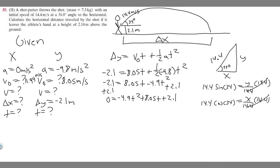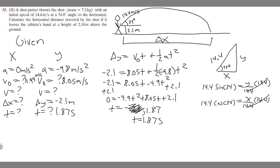The best way to solve this, if your teacher allows a graphing calculator, is to plug in this function and find where it intersects 0 — those are your time values. Doing that gives two values: t equals minus 0.23 and 1.87. Time in the real world cannot be negative, so we discard minus 0.23. Therefore t equals 1.87 seconds. The time is the same for both directions — it reaches the ground after 1.87 seconds both vertically and horizontally.